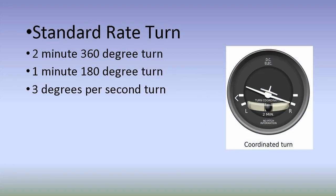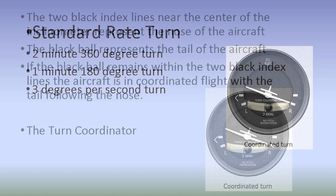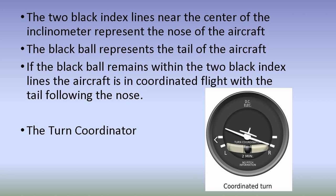A standard rate turn is a two-minute turn — in two minutes you complete a 360-degree turn, which is 3 degrees per second or 180 degrees in one minute. We use the turn coordinator for this discussion. The turn coordinator has a little airplane; if one wing dips down to the lower white index marks, that indicates a standard rate turn.